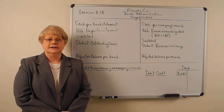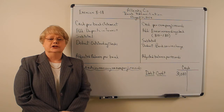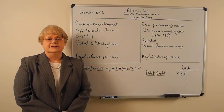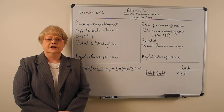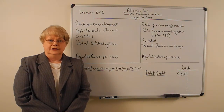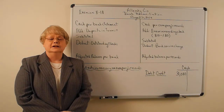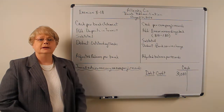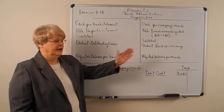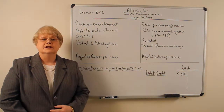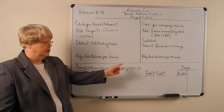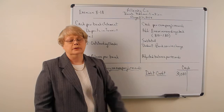In order to reconcile a bank statement, we're going to look at what we have on our accounting records and also look at the bank statement, comparing the amounts going through both to see what the differences are. Those differences are going to be the reconciling items — items we have in the accounting records that the bank has not yet recorded, and items the bank has recorded that we have not yet recorded. The purpose of the reconciliation is to come up with an adjusted balance on both sides that is the same.